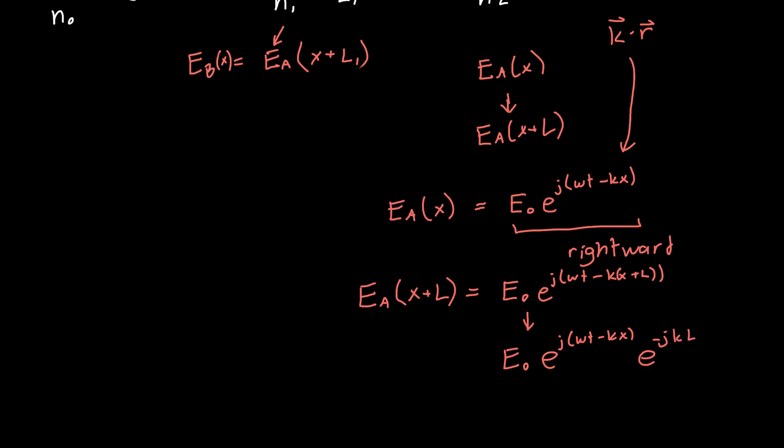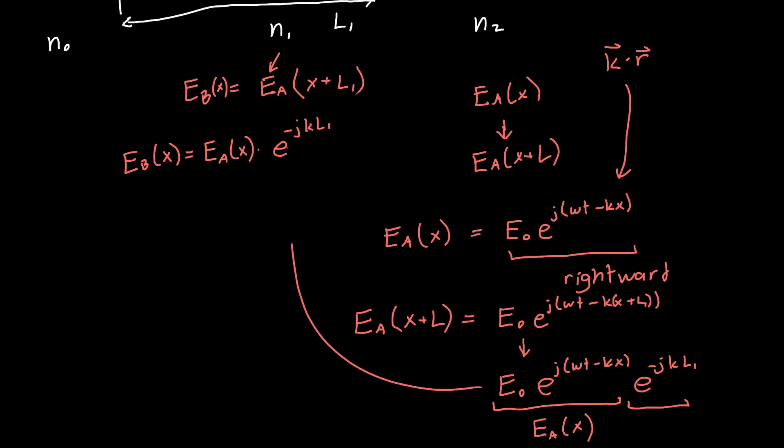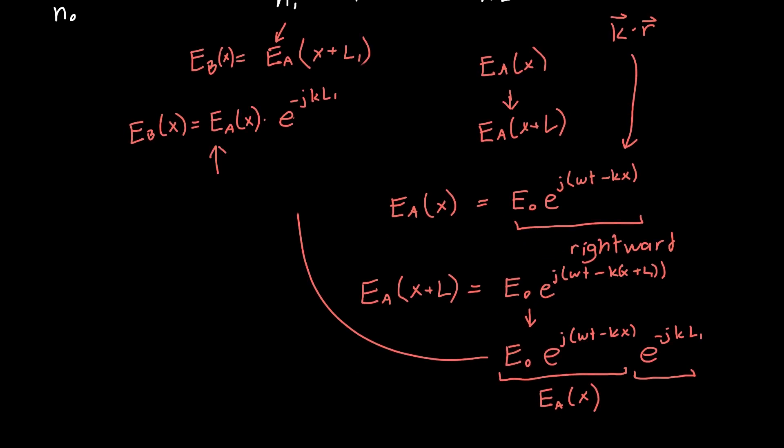Rewriting this, E naught E to the J omega T minus KX times E to the minus J KL. That's exactly what we wanted. We wanted EA of X plus L. Notice that we've still got our initial EA of X right here. This is just what we started out with. And then it's multiplied by some phase or some complex number. So EB of X is just equal to EA of X times E to the minus J K L1, and we've got a relationship between EB of X and EA of X.